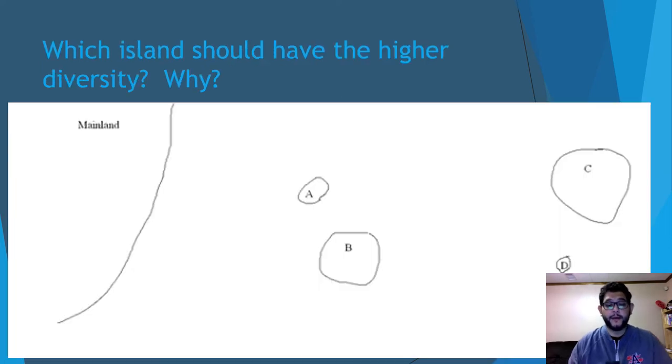Here we have an example of four islands. Here's the mainland on the left side, and on the right side we've got four different islands: Island A, Island B, Island C, and Island D. The idea for island biogeography is that the islands that tend to be the closest and the biggest would have the highest biodiversity. So why is this?